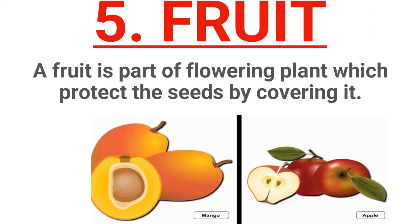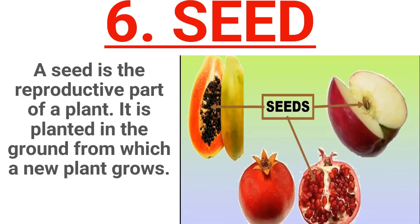Next is the fruit. A fruit is a part of flowering plants which protects the seeds by covering them. Last is the seed. A seed is the reproductive part of a plant. It is planted in the ground from which a new plant grows. Amazing, right? From a seed, you can grow a plant.